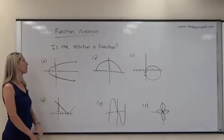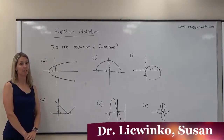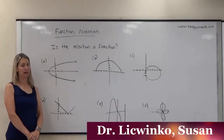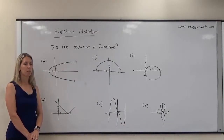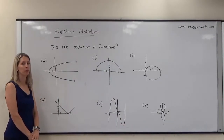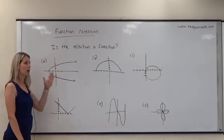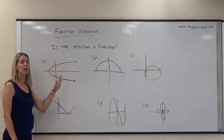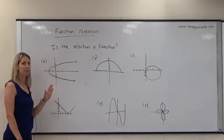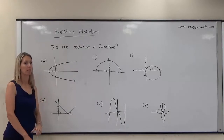In this video we're going to determine whether a graph is a function or not. In order to verify whether a graph is a function or not, we use what's called the vertical line test. The vertical line test says if I draw a vertical line on a function, I will not hit the function in more than one place.